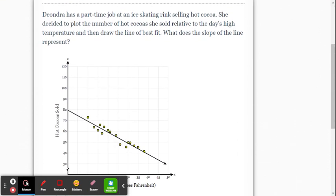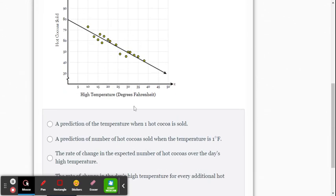Deanna has a part-time job at the ice skating rink selling hot cocoa. She decides to plot the number of hot cocoa she sold relative to the day's high temperature and then draws a line of best fit. What does the slope of the line represent? Well, what's going on here? So the number of hot cocoa sold is decreasing as the temperature, the high temperature for the day increases.